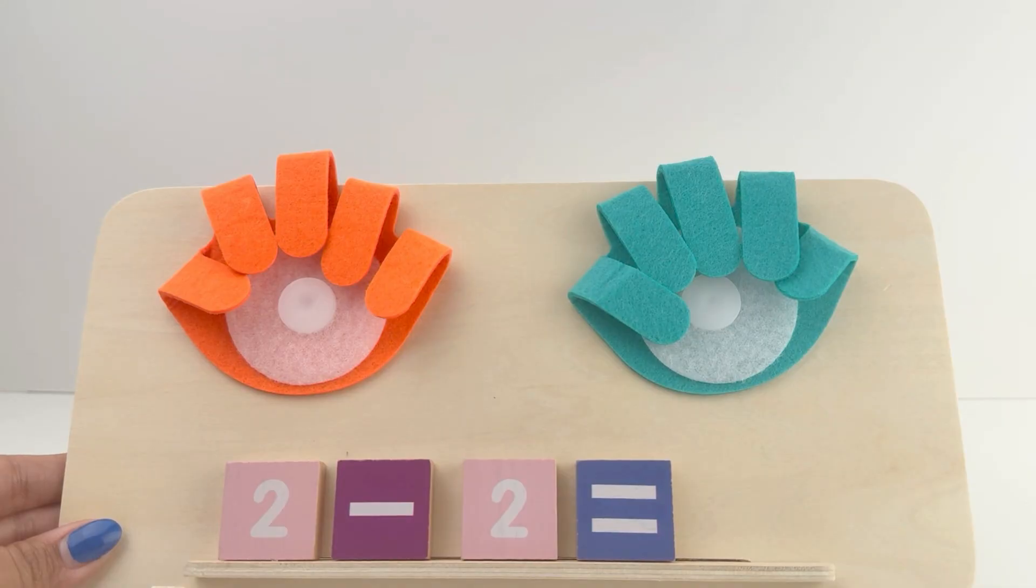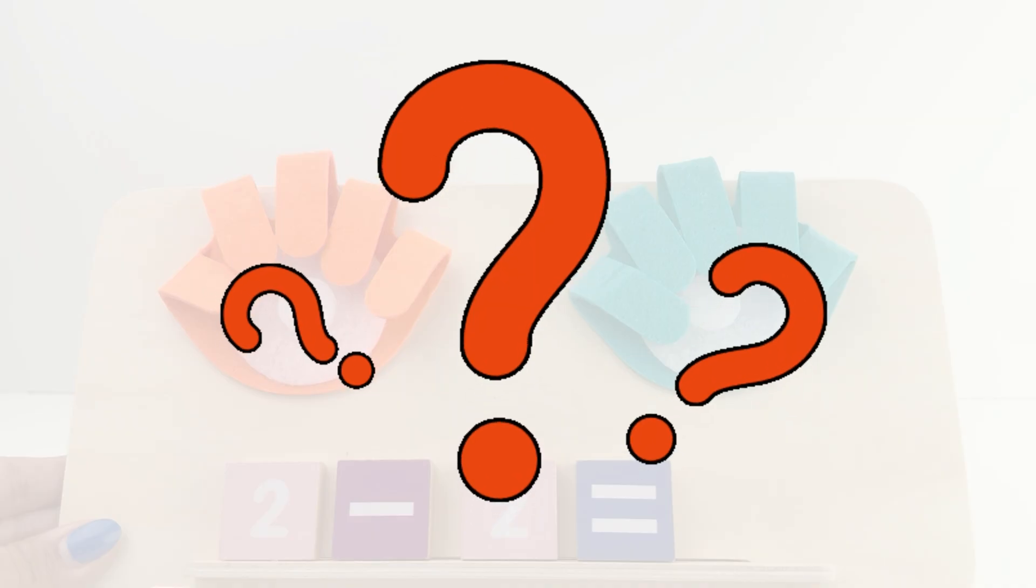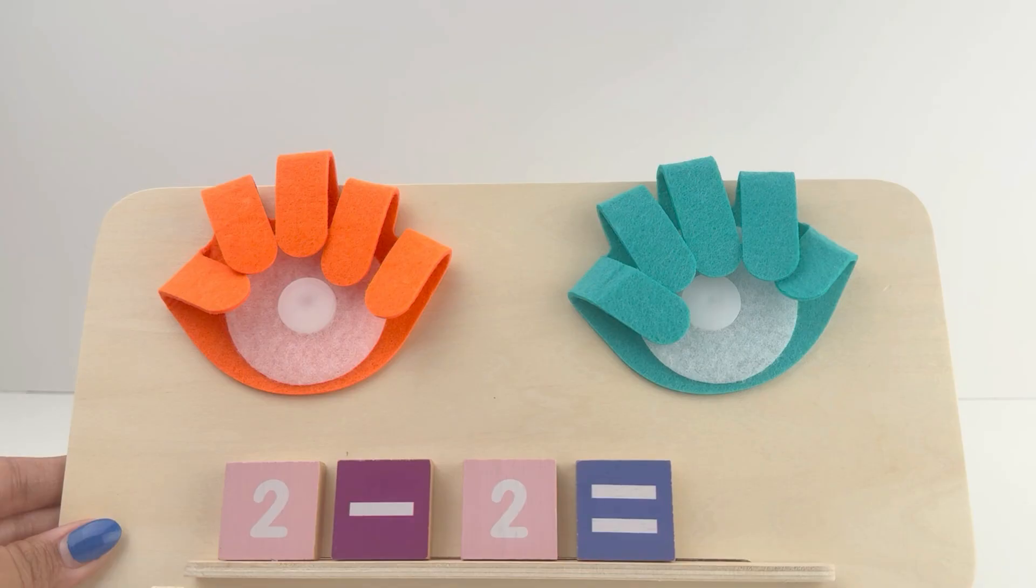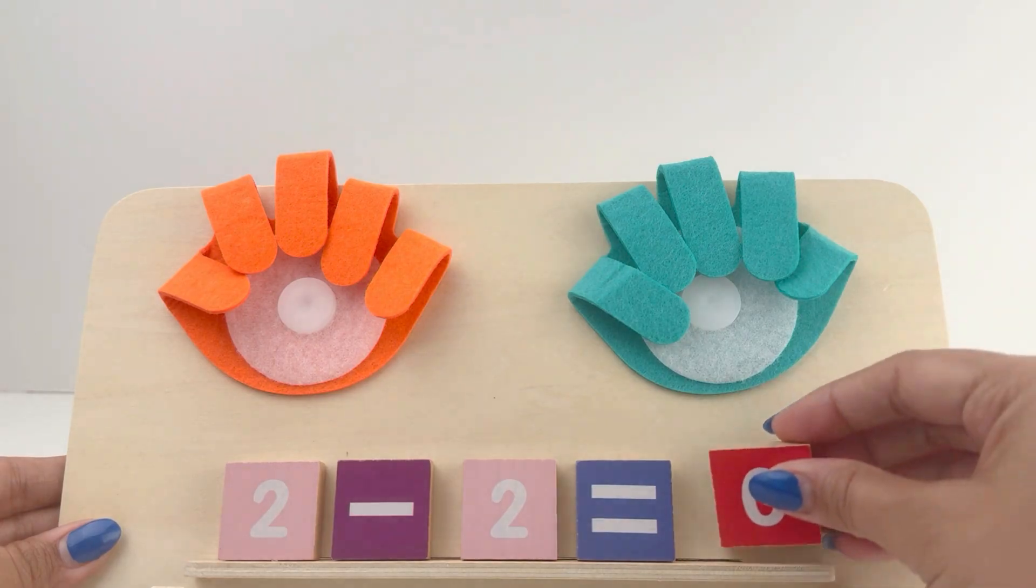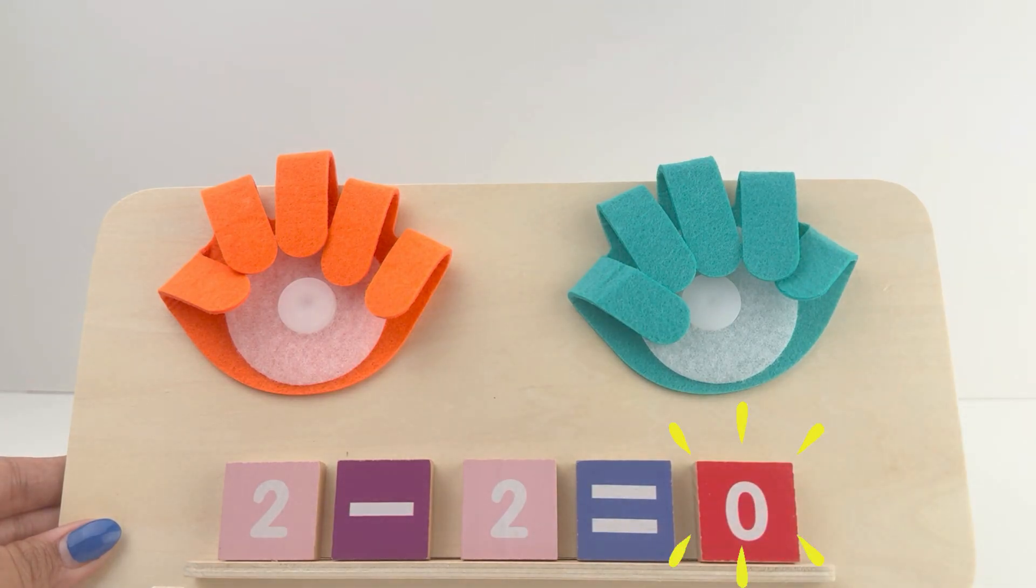Now friends, how many oranges are you left with? No fingers are open. 2 minus 2 equals 0.